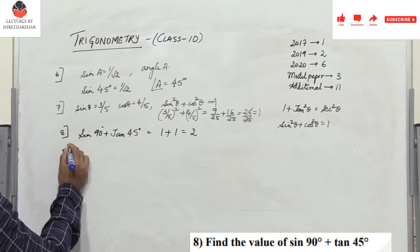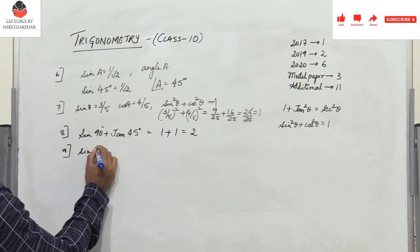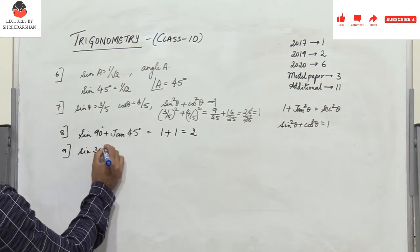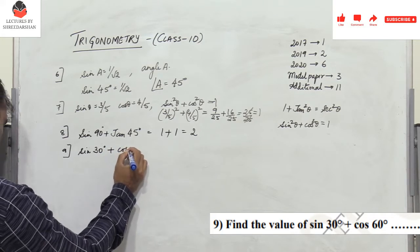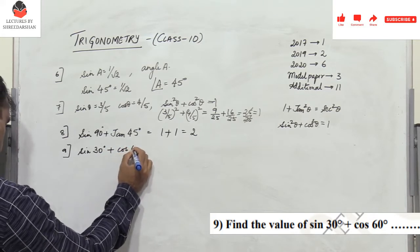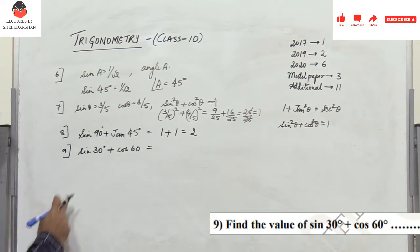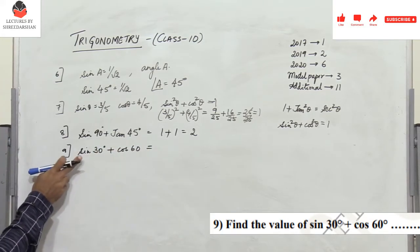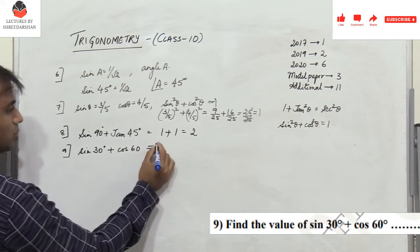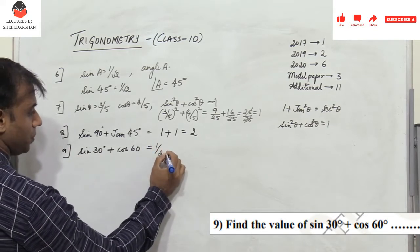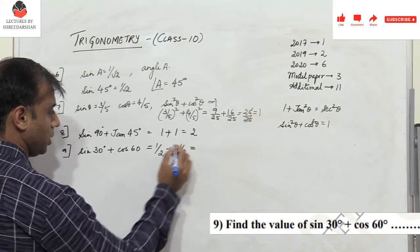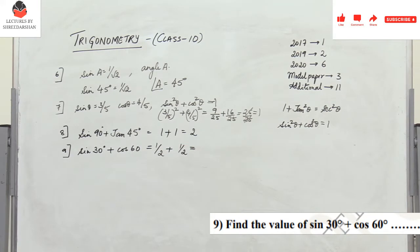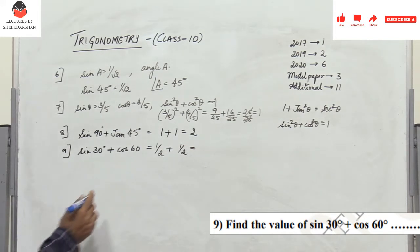Problem 9: sin30° + cos30°. We know sin30° = 1/2 and cos30° = 1/2 — actually this should be sin30° + cos60°, both equal 1/2, so 1/2 + 1/2 = 1.